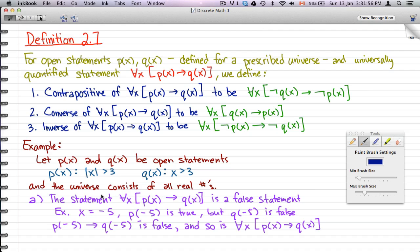For example, if we let x be negative 5, then p(-5) is true, but q(-5) is false. This is because absolute value of negative 5 is 5, 5 is greater than 3, that's true, negative 5 is not greater than 3, and that is false.